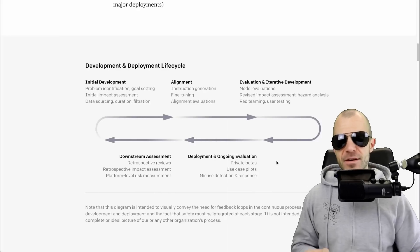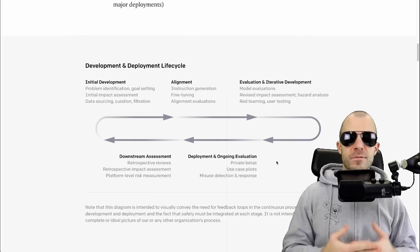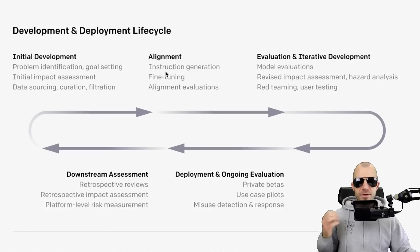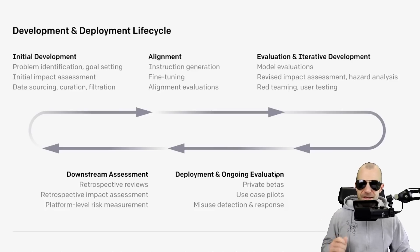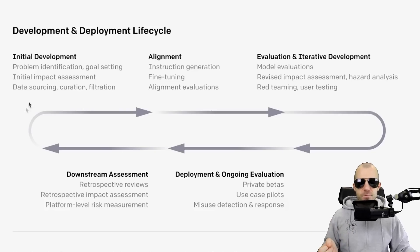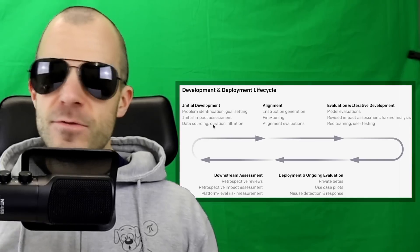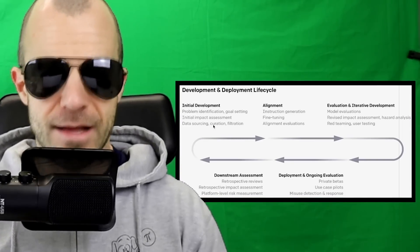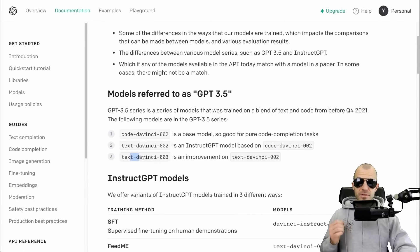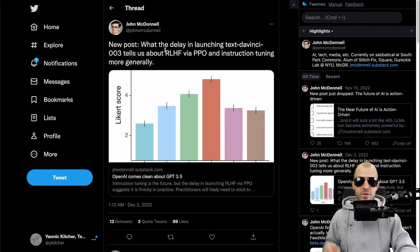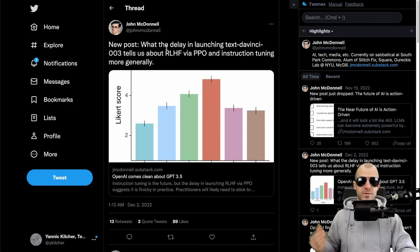OpenAI describes a development and deployment lifecycle they call iterative improvement: from initial development to alignment with fine-tuning using instructions, then red-teaming and user testing, then private betas, then pilots, then risk assessments and retrospective impact assessment - and then the loop closes and they develop a newer model. OpenAI hopes to improve their models and make them more human-aligned. But what I don't see here? You ever getting that model.